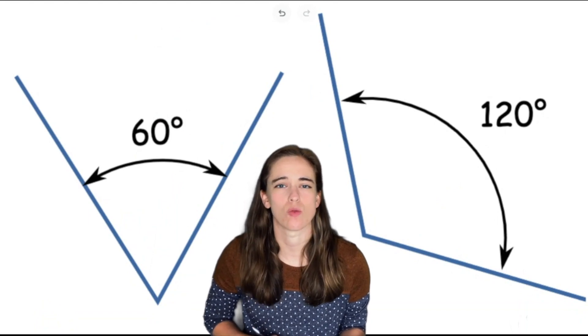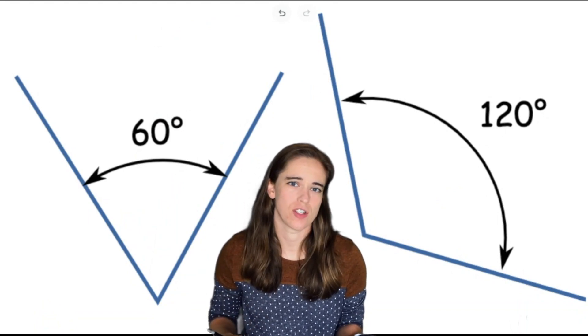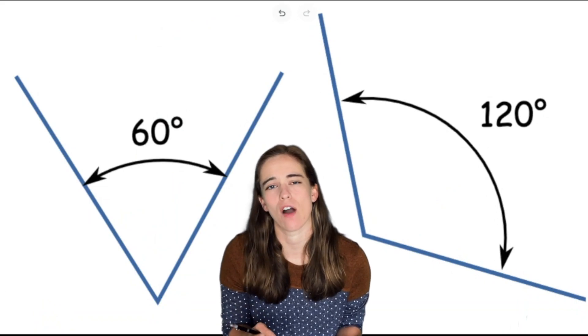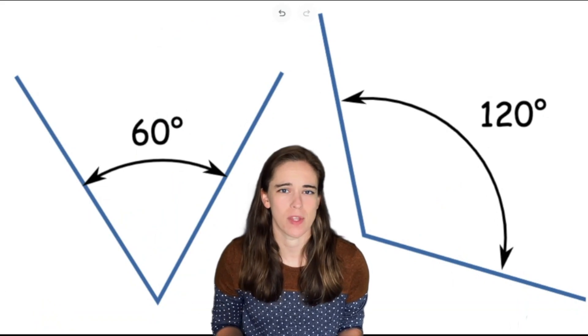Behind me you should see two angles. One is 60 degrees and the other is 120 degrees. A degree is simply how we measure an angle. It's how far one leg is from the other leg.